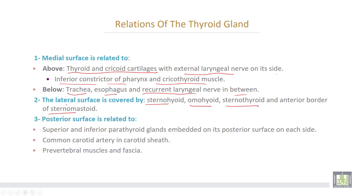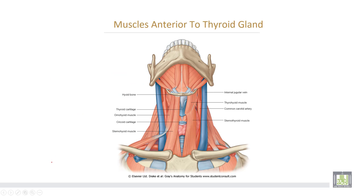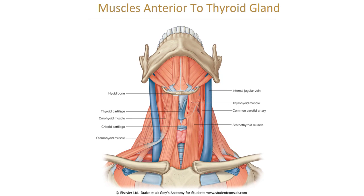The posterior surface is related to the superior and inferior parathyroid glands, embedded in its posterior surface, one on each side. Also related to the common carotid artery, the carotid sheath, pre-vertebral muscles, and pre-vertebral fascia. These are the infrahyoid muscles anterior to the thyroid gland: thyrohyoid, sternothyroid, sternohyoid, and omohyoid muscles.